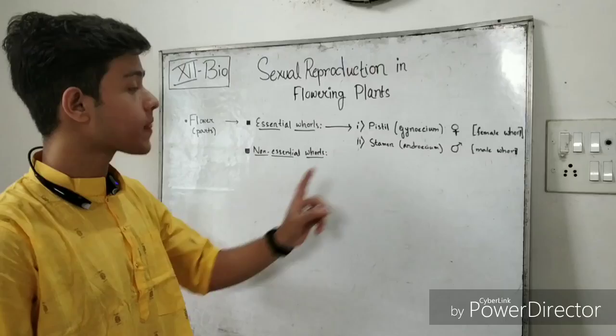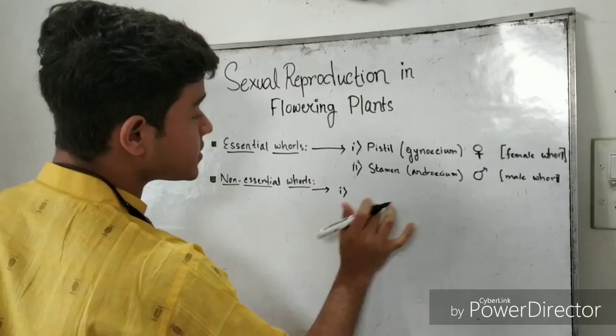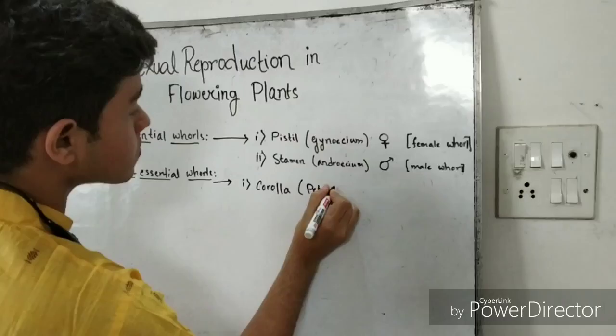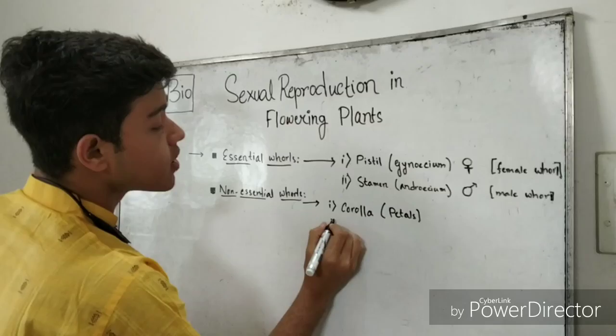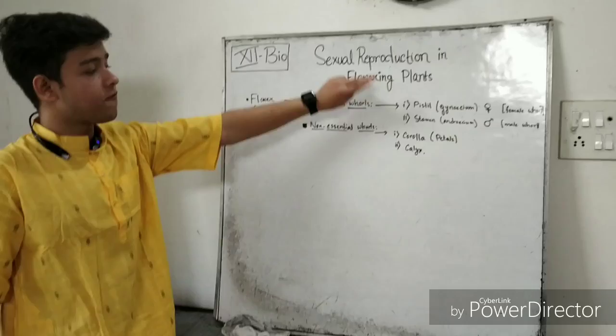Now let us talk about the non-essential whorls. Next to stamen, going sequentially, would be the corolla — commonly known as petals. These are usually colored and serve as an attractive mechanism for the flower. And next is the outermost whorl, the calyx, usually green. So we have identified the four whorls of a typical complete flower.